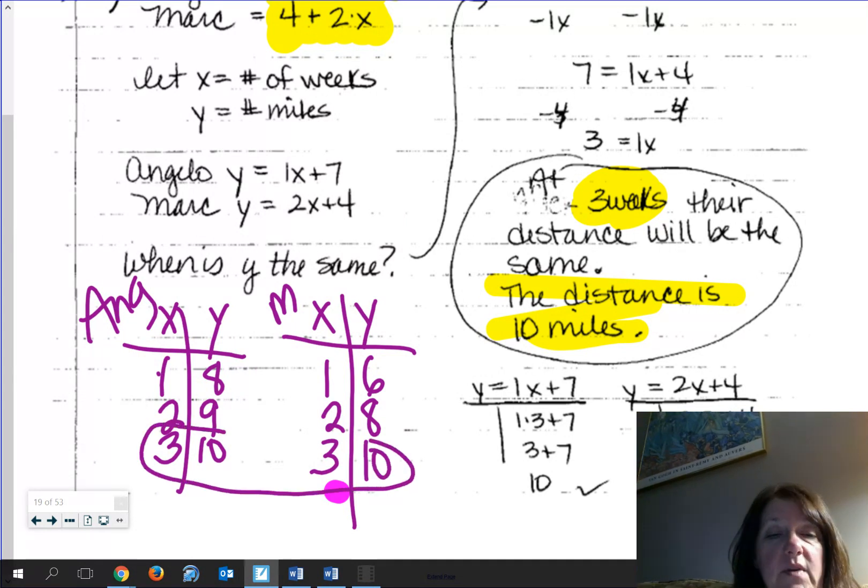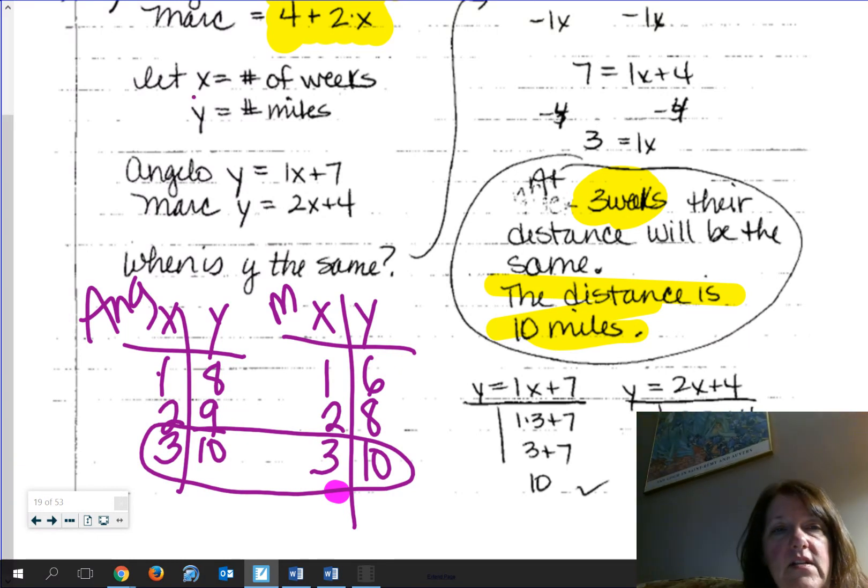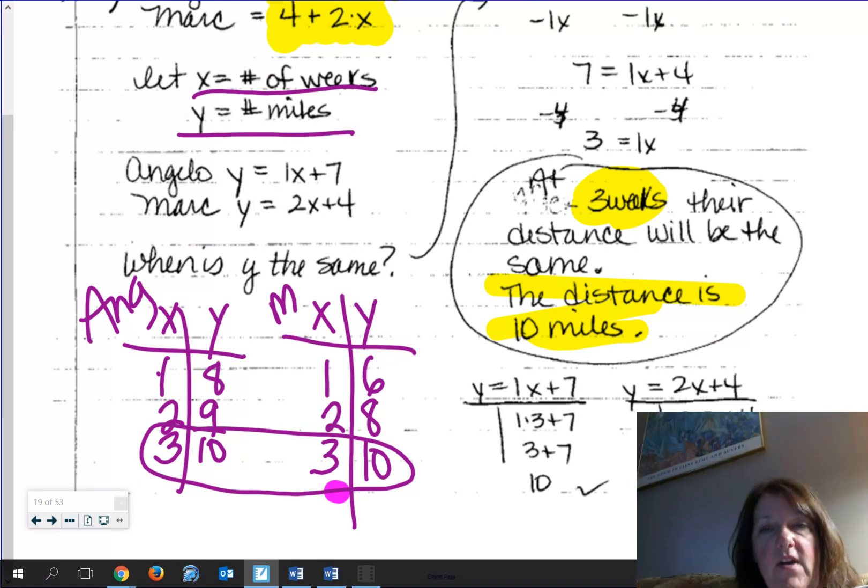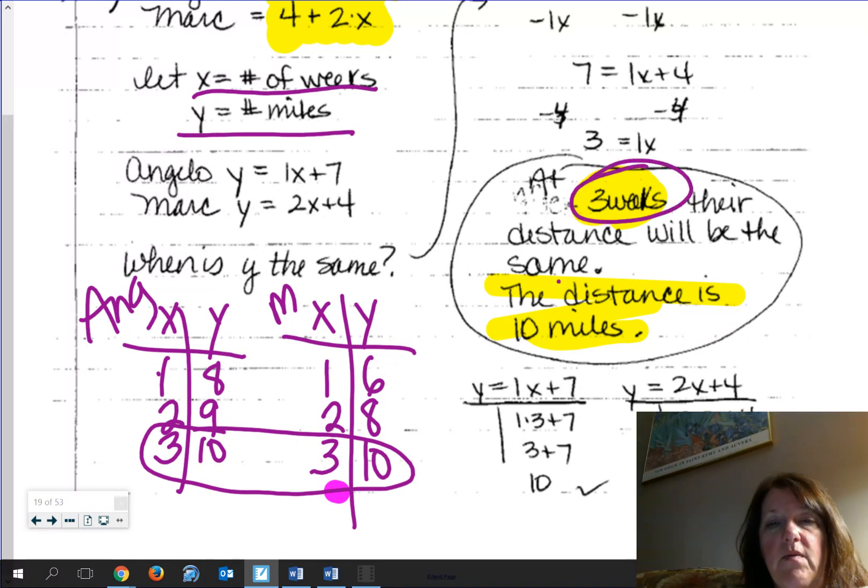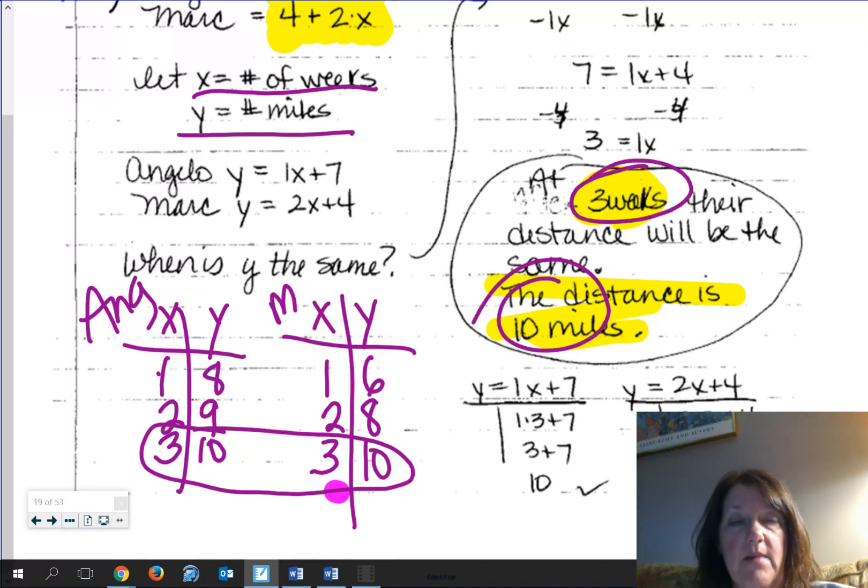The x value is the weeks. The y value is miles. So that's why we say at three weeks, their distance is the same at 10 miles. All right, then I said, go ahead, jump to 28. We'll do a little of this review.